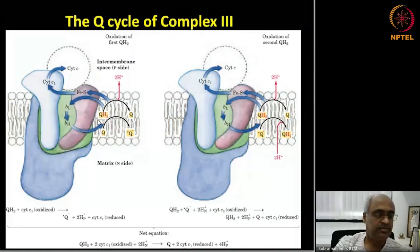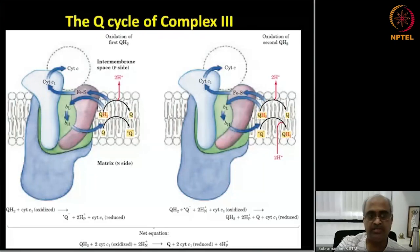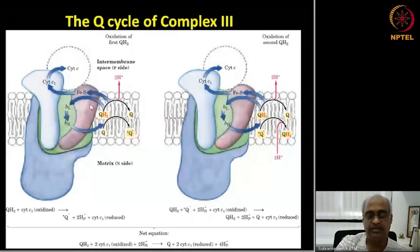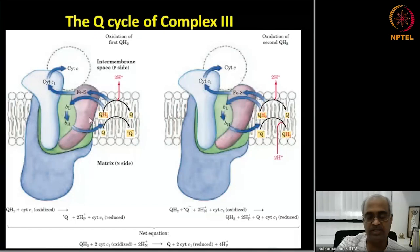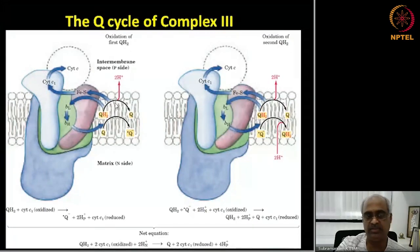Starting from the first cycle: the fully reduced ubiquinol (QH2) transfers one electron to cytochrome C, and the other electron goes back via cytochrome B to a fully oxidized quinone, forming a semiquinone radical. Having given up both electrons and both protons, the molecule becomes fully oxidized quinone.